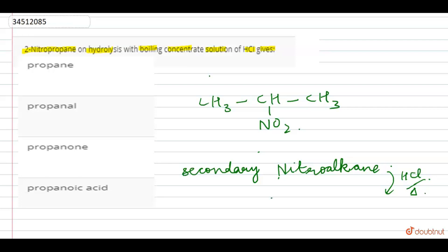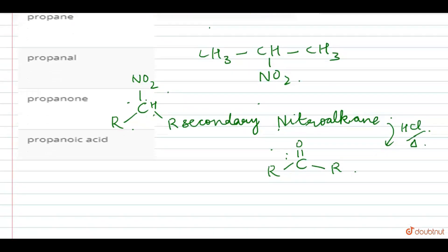...gives a ketone. So any type of secondary nitroalkane on reaction with boiling HCl followed by hydrolysis gives a ketone.